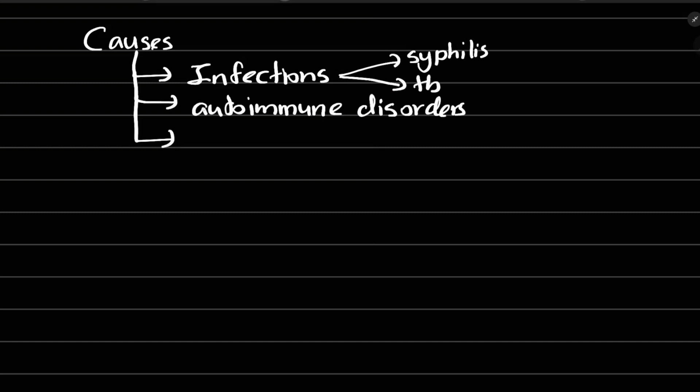Causes for meningitis - mostly due to infections such as syphilis, tuberculosis, autoimmune disorders, cancer medications.